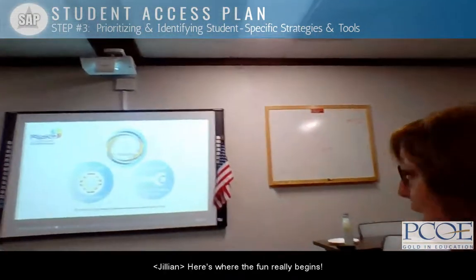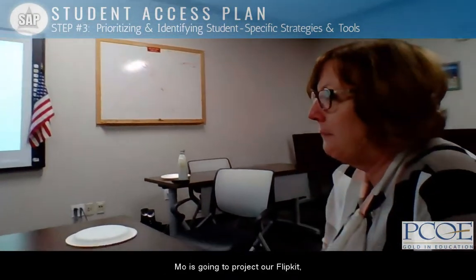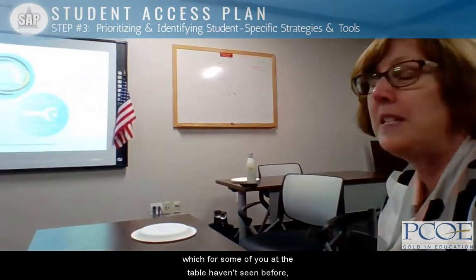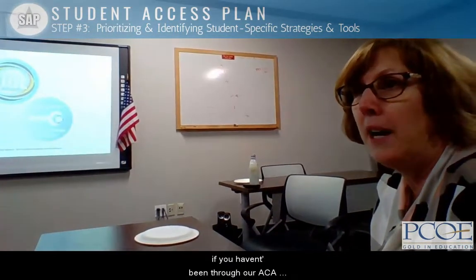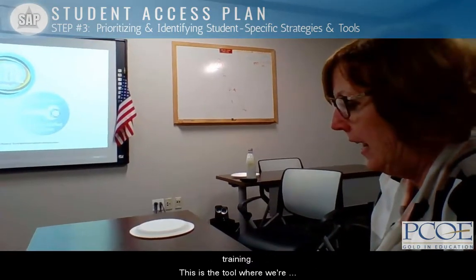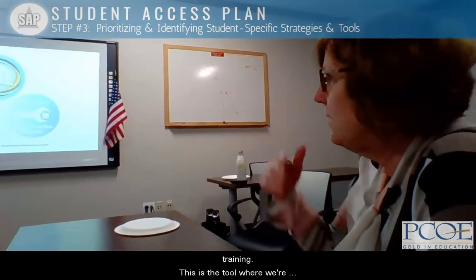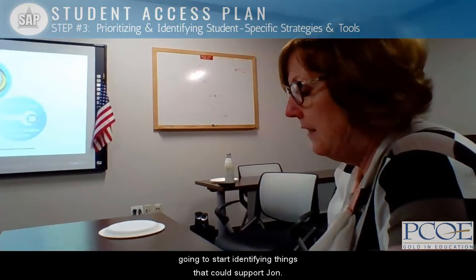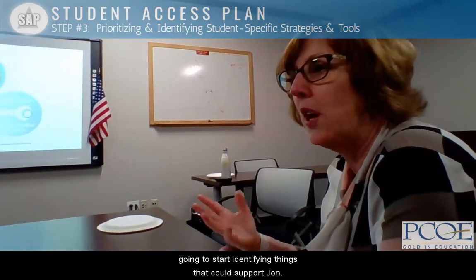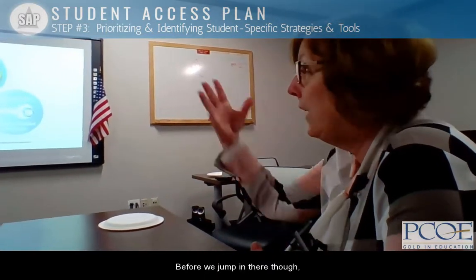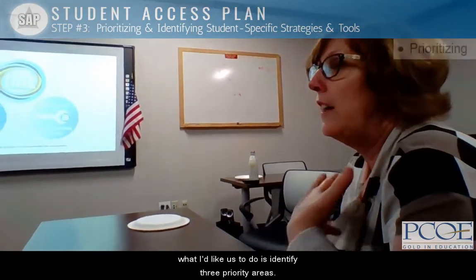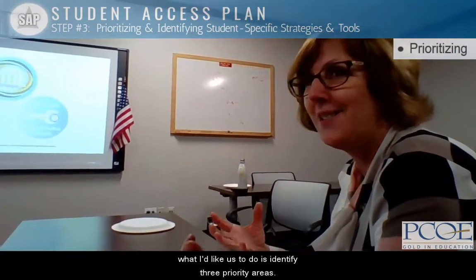Here's where the fun really begins. Mo's going to project our flip kit, which some of you here at this table haven't seen before if you haven't been through our ACA training. But this is the tool we're going to use to start identifying things that can support John. Before we jump in there, though, what I'd like us to do is just identify three priority areas.